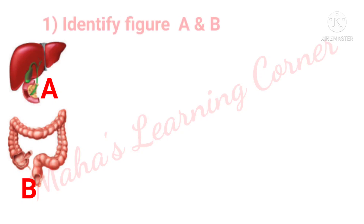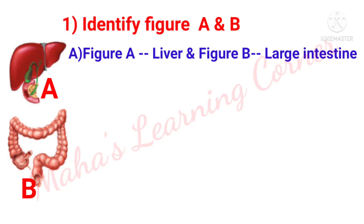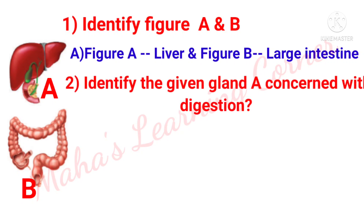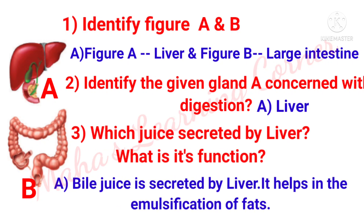Identify figure A and B. Answer: Figure A is liver, figure B is large intestine. Identify the given gland concerned with digestion. Answer: Liver. Which juice is secreted by the liver and what is its function? Answer: Bile juice is secreted by the liver. It helps in the emulsification of fats.